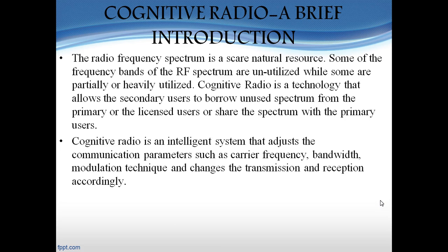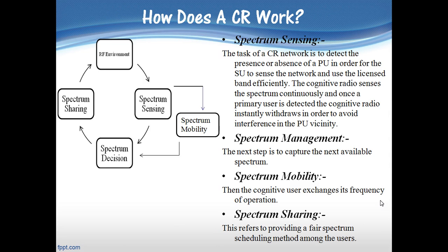Cognitive radio is an intelligent technology that allows the secondary user to borrow the spectrum from the primary licensed users, leading to an efficient use of the spectrum. It adjusts the communication parameters such as carrier frequency, bandwidth, and modulation techniques, and changes the transmission and reception accordingly. The primary task of the cognitive radio network is to detect the presence and absence of primary users in order for the secondary users to sense the network and use the licensed band efficiently. It senses the spectrum continuously and once a primary user is detected, it instantly withdraws to avoid interference. The cognitive radio is flexible in terms of transmission characteristics and improves the spectrum utilization.